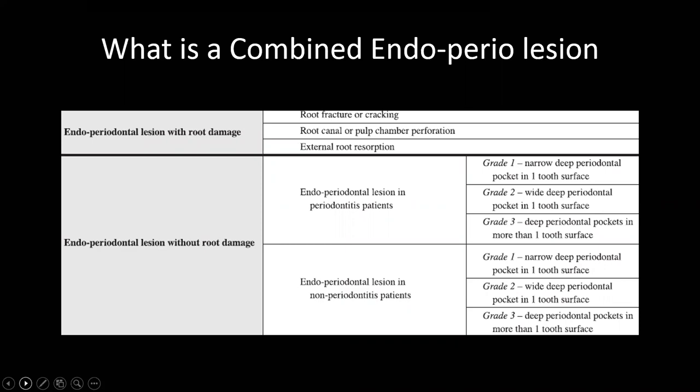Combined perio-endo lesions have been well addressed in the new classification — identifying what could and could not be treated. A grade one is worth considering endodontic treatment; as we go into grade two and three, the probability of re-establishing clinical attachment drops considerably. Importantly, do not debride teeth after undertaking endodontic treatment in non-periodontitis patients, because the root surface would have viable stem cells and debriding will cause loss of these cells and reduce the probability of attachment gain.